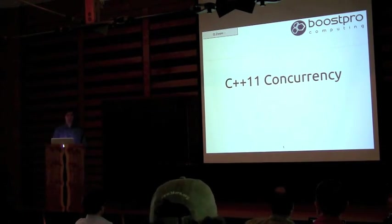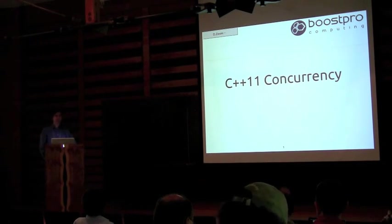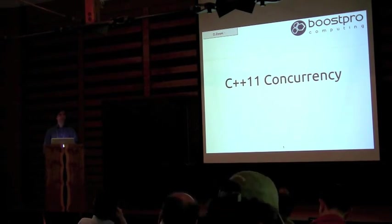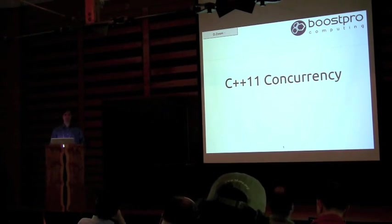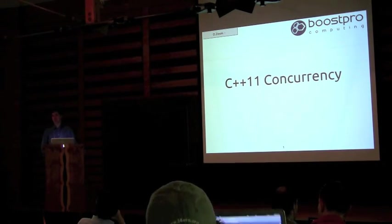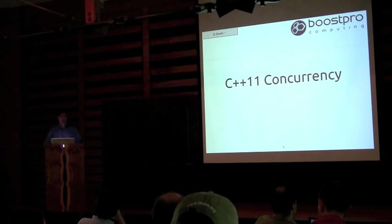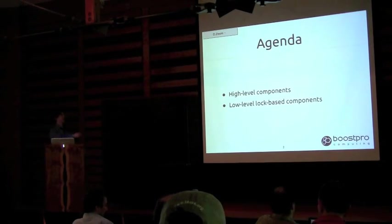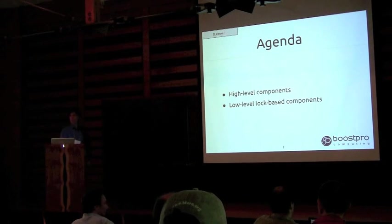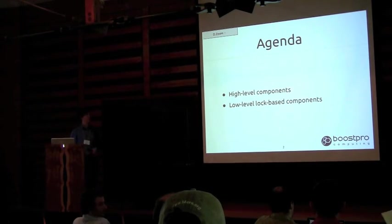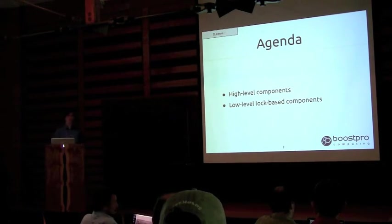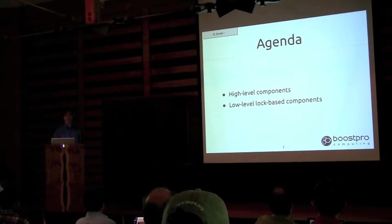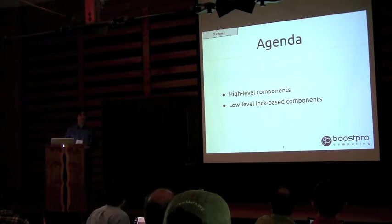I started with pthreads library. If you've used either of those, none of these concepts are going to be foreign. There are a couple nice things that C++11 has, like Futures, but a lot of the core technology is still the same. This talk we're going to cover two different aspects of C++11 support for concurrency: high-level components for creating and managing threads, and low-level lock-based components for making thread-safe data structures.